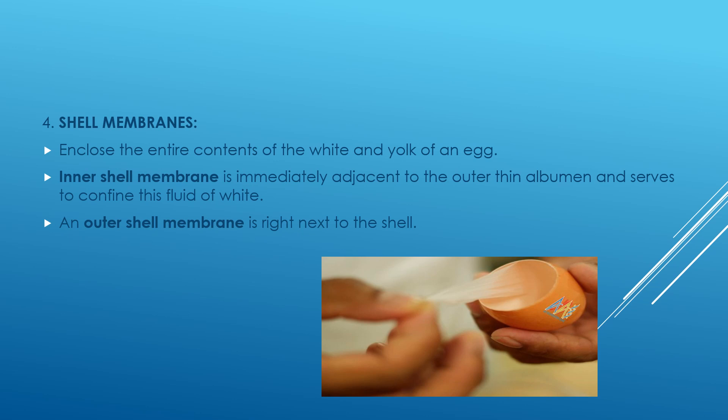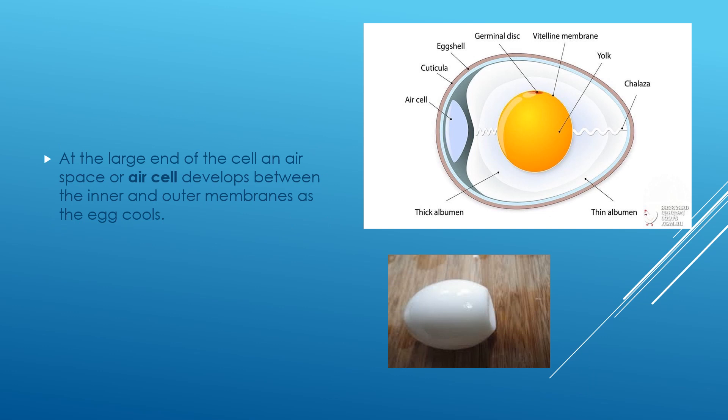The shell membrane encloses the entire contents of the white and yolk. It is immediately adjacent to the outer thin albumin and serves to confine the fluid of the white. There is also an outer shell membrane next to the shell. At the large end of the egg is an air space known as the air cell, which develops between the inner and outer membrane as the egg cools. This air cell is very important for determining the freshness of the egg.